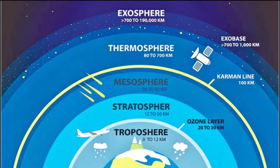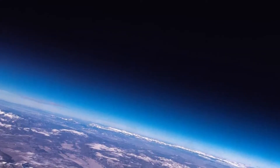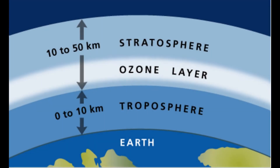Where is ozone found? It occurs in Earth's upper atmosphere, the stratosphere, and lower atmosphere, the troposphere. Stratospheric ozone is formed naturally through the interaction of solar ultraviolet radiation with molecular oxygen. The ozone layer approximately spreads through 6 to 30 miles above the Earth's surface.